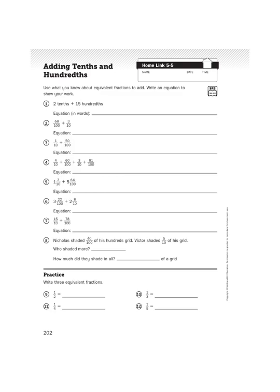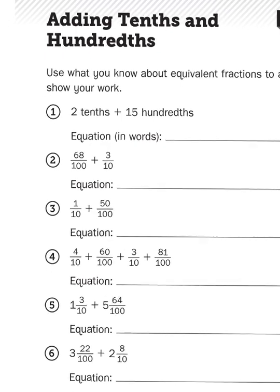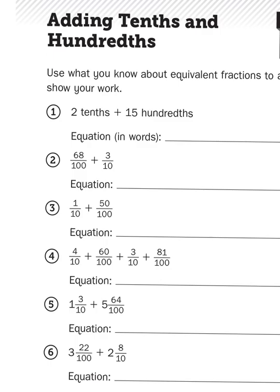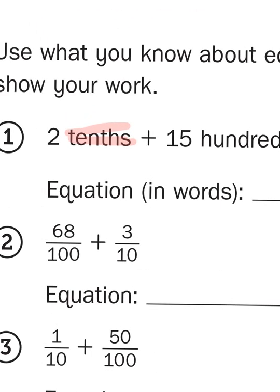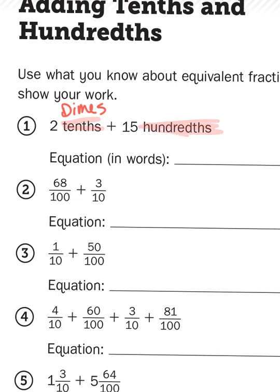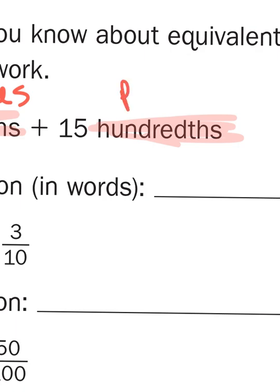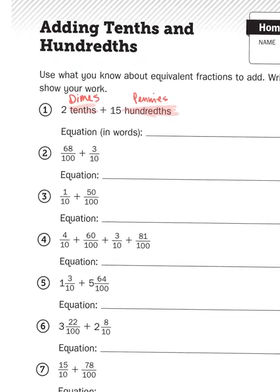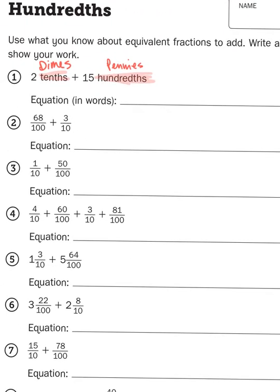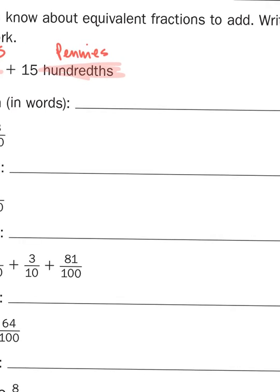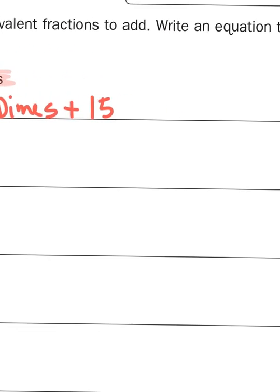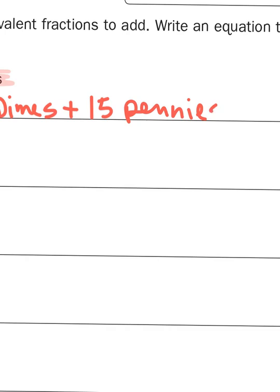Let's take a look at the first problem. It says 2 tenths plus 15 hundredths and write the equation in words. For our purposes for number one I'm going to change up the words a little bit. Instead of the word tenths I'm going to use the word dimes, and instead of the word hundredths I'm going to use the word pennies. So if I have 2 dimes and 15 pennies, what would that equation look like? Well here's 2 dimes plus 15 pennies equals what?